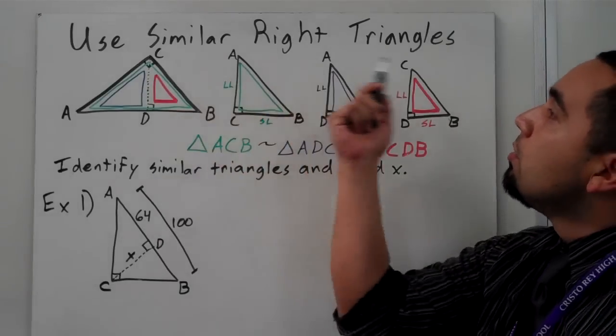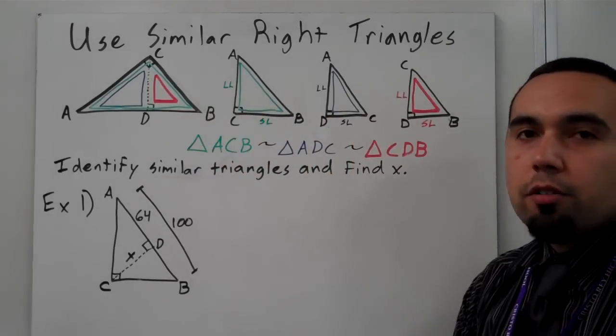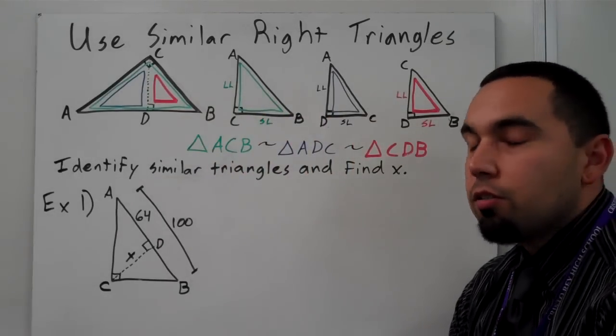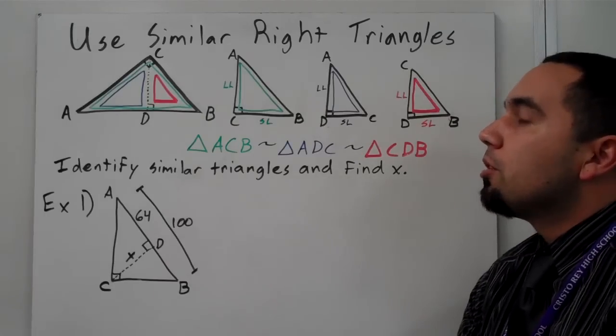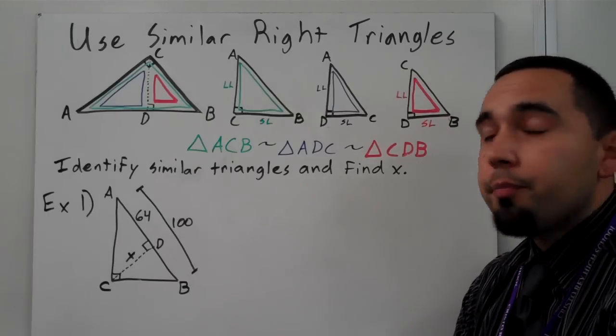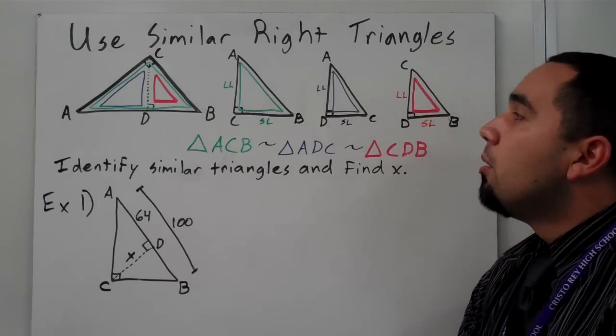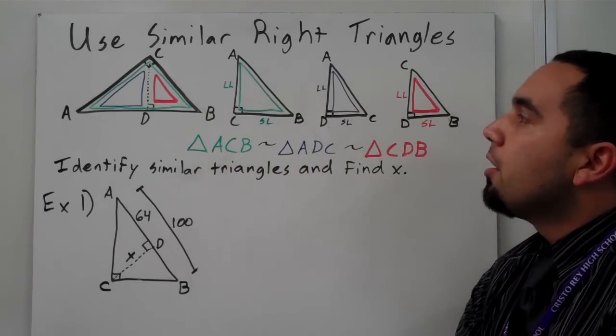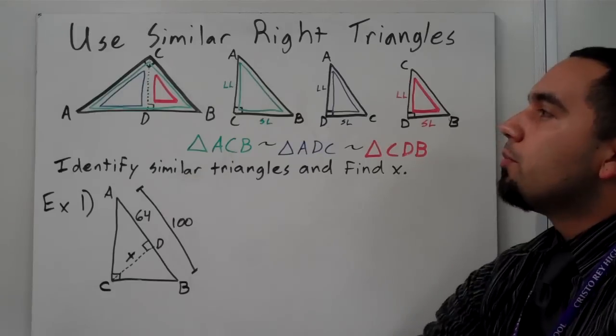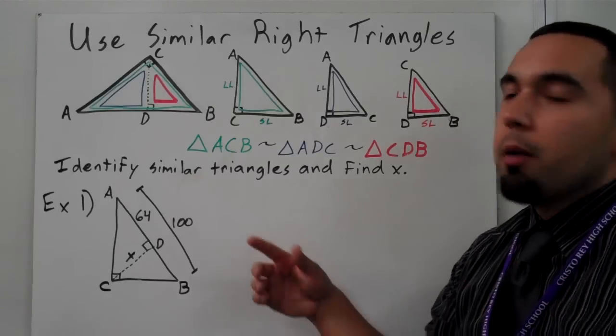This section is on similar right triangles, and this is one of the harder sections in Chapter 7, so I'm going to take it kind of slow. You can see there's a lot to write down here, so I'm going to take my time.